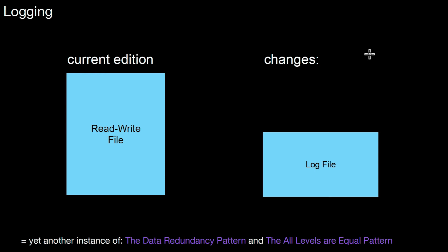In logging, the idea is you have a current edition that is read-write, and you collect the changes in a log file. There are many options on how to organize a log file — you can do physical logging, logical logging, we will look at that. The high-level idea is you have a list of changes you collect, and this is typically an example of redundancy. You have the changes collected in the log file and the changes applied in the current edition. This means logging is yet another example of the data redundancy pattern.